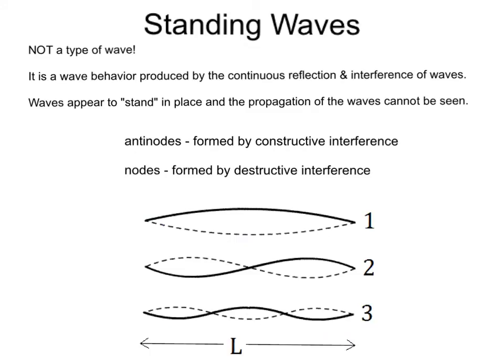Standing waves. It's important to recognize that standing waves are not a type of wave, but a wave behavior. It's a wave behavior produced by continuous reflection and interference of waves. It's where those waves appear to stand in place, and the propagation of the individual waves cannot be seen. In class we saw these on the wave machine, and you'll produce these on a slinky or spring.